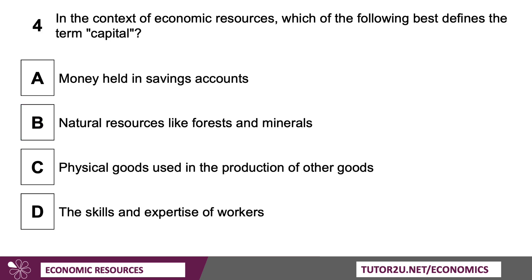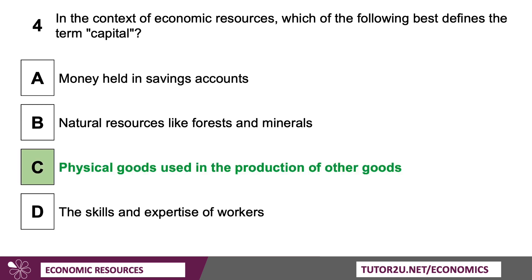Question four: In the context of economic resources, which of the following best defines the term capital? The answer is C — physical goods used in the production of other goods.